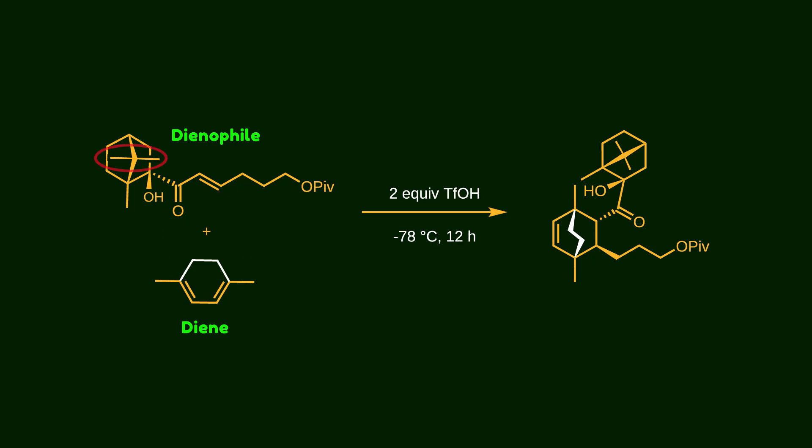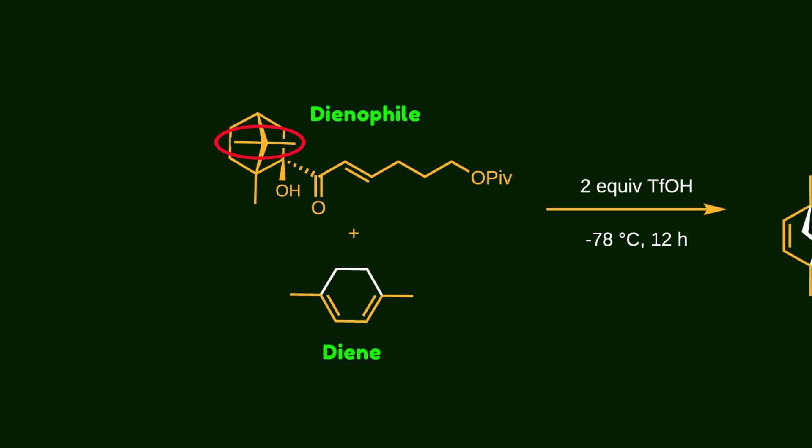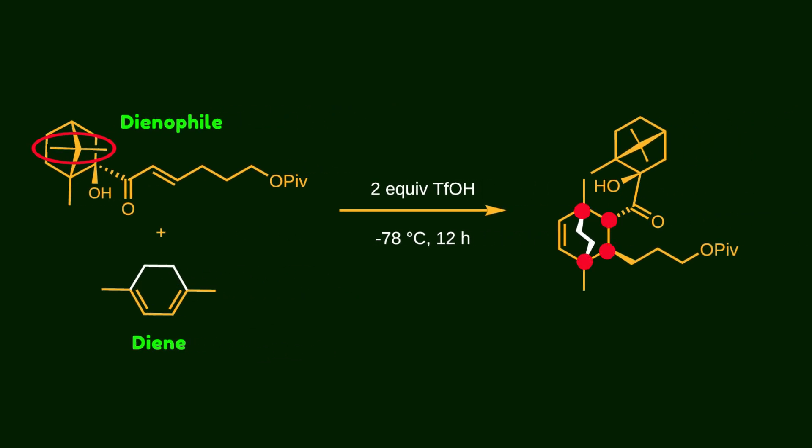In our case, the camphor moiety on the dienophile plays a crucial role in controlling the diastereoselectivity. Due to steric hindrance, the dienophile approaches the diene from the side opposite to the bulky substituents. In other words, the camphor moiety acts as a chiral auxiliary, inducing chirality in the product.